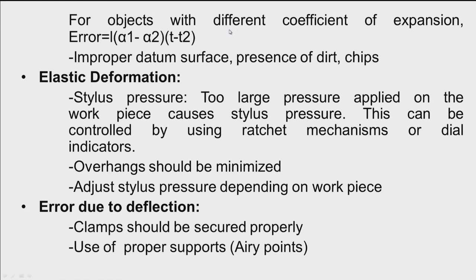If we have two different kinds of materials, the error can be calculated using the relationship: L × (α₁ − α₂) × (T − T₂), where α₁ is the coefficient of thermal expansion of the first material and α₂ is the coefficient of thermal expansion of the second material.